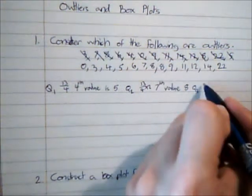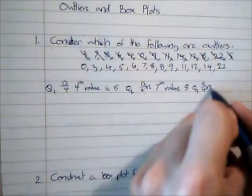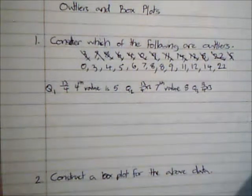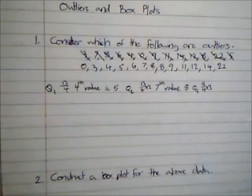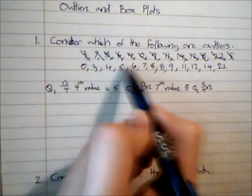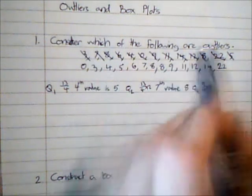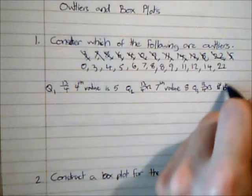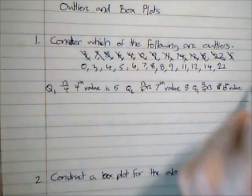And then Q3 is 13 over 4 times 3, which is going to be a little over 9, so I'm going to use the 10th value, which is 11.